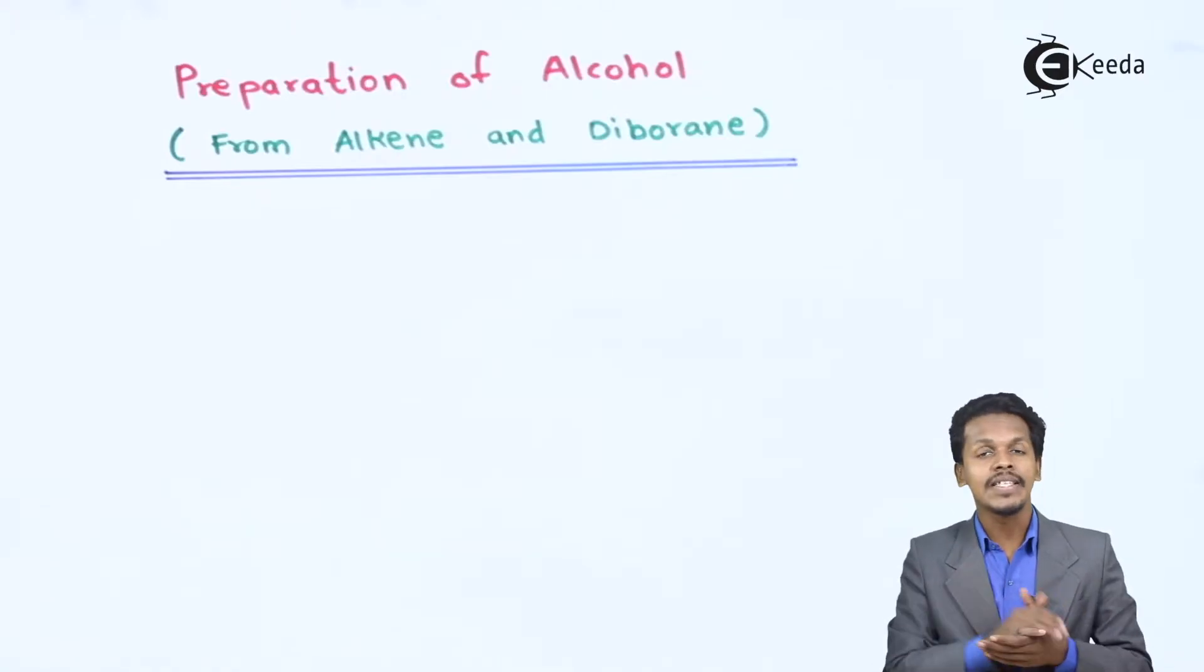So friends, now in this topic we are going to discuss how we can prepare alcohol from an unsaturated alkene using Diborane. So for that let me give you the general reaction and after that we will get to the example of that general reaction.